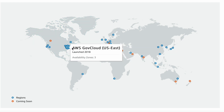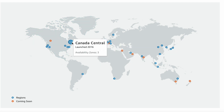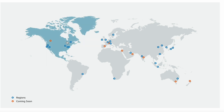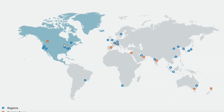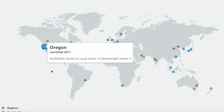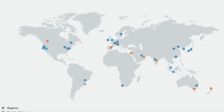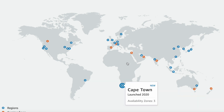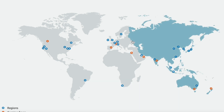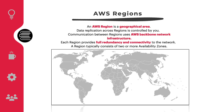You can also choose the tab to view a map of a selected geography and a list of regions, edge locations, local zones, and regional caches. The global infrastructure is designed and built to deliver a flexible, reliable, scalable, and secure cloud computing environment with high quality global network performance.